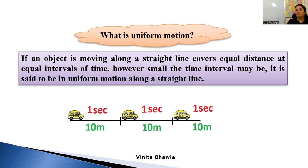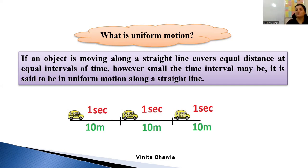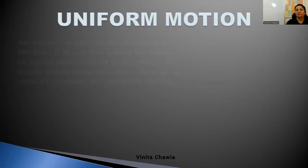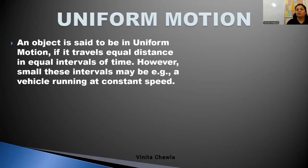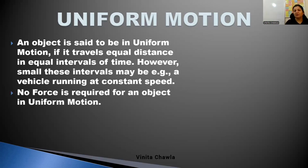If the object covers equal distance in equal intervals of time, then the object is moving with constant speed. So in uniform motion, the object moves with constant speed.